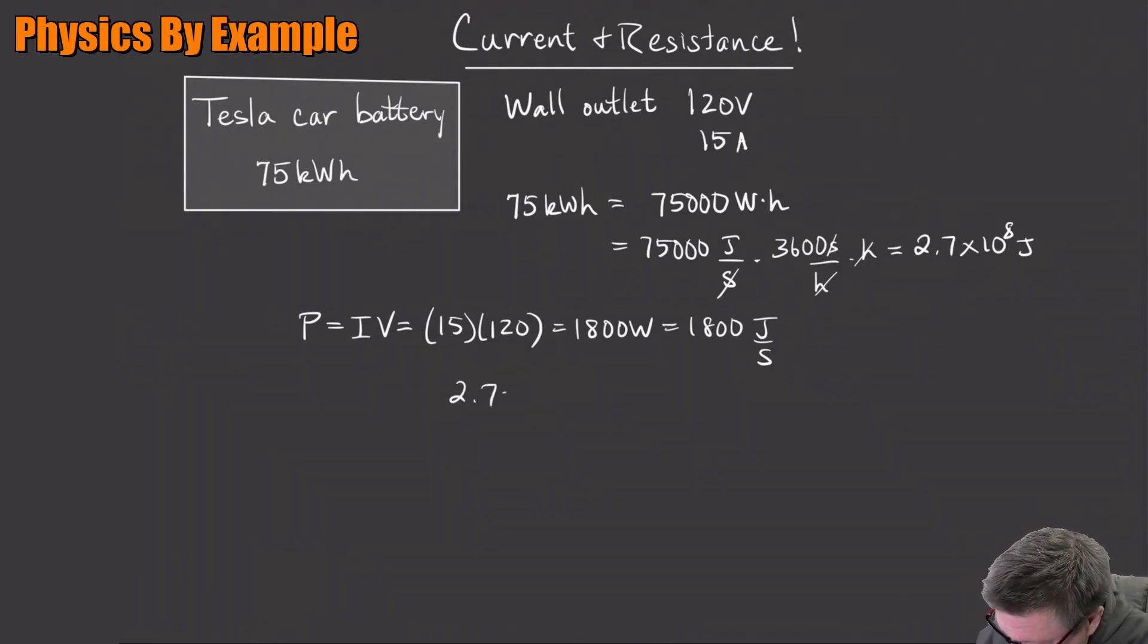Okay, so if I have 2.7 times 10 to the 8th joules and I only get it at 1.8 times 10 to the 3rd joules per second, that's going to give me a number of seconds that it'll take to get the thing charged up. 2.7 divided by - what's that, 3? That's about 1.5. So it's about 1.5 times 10 to the 5th, so 150,000 seconds.